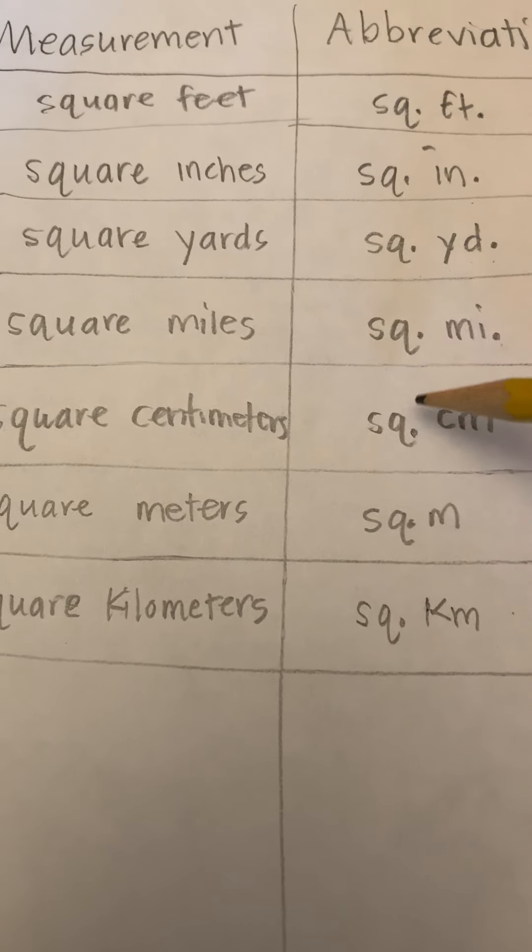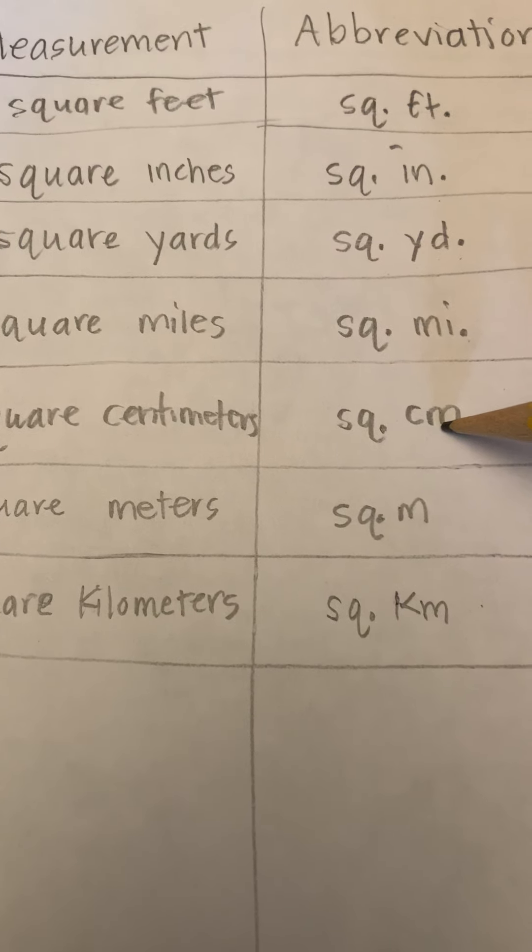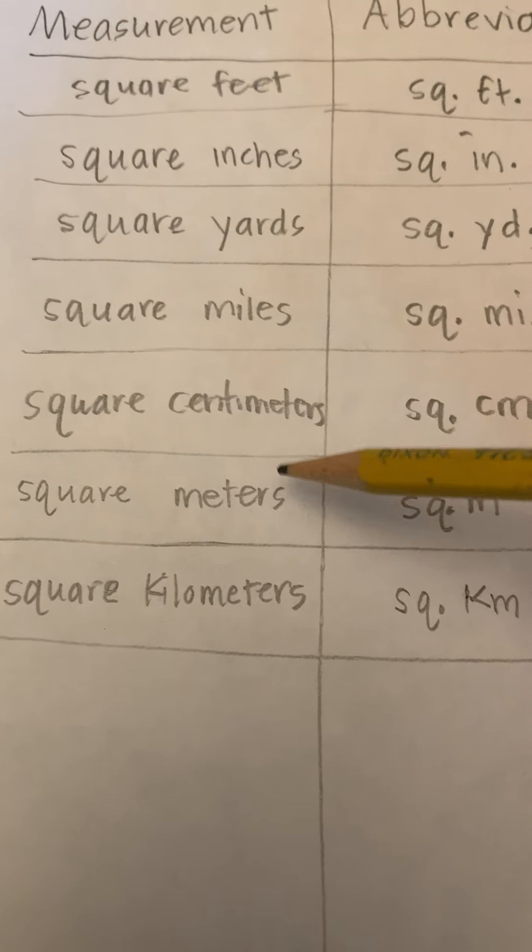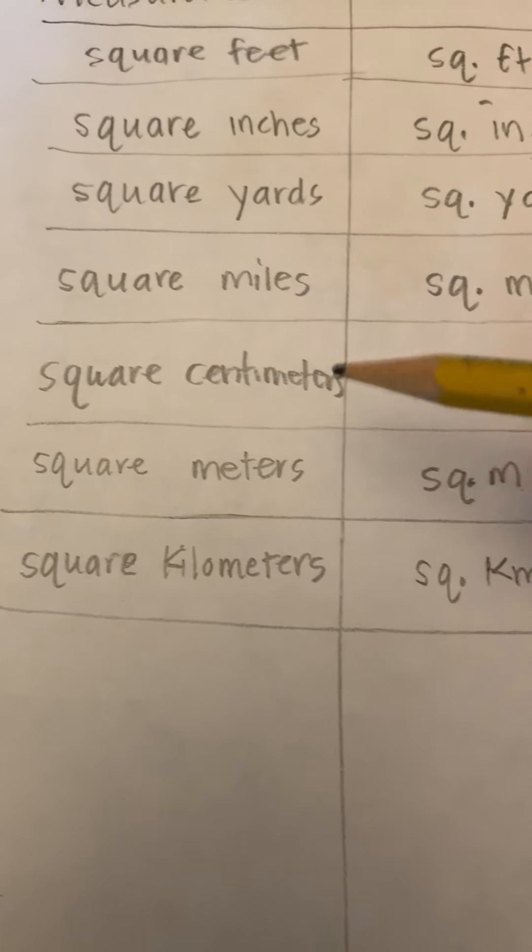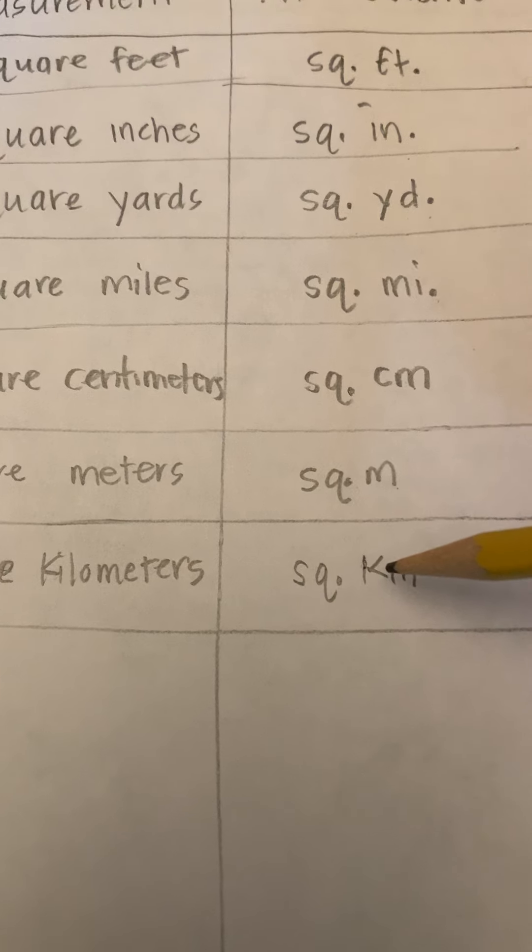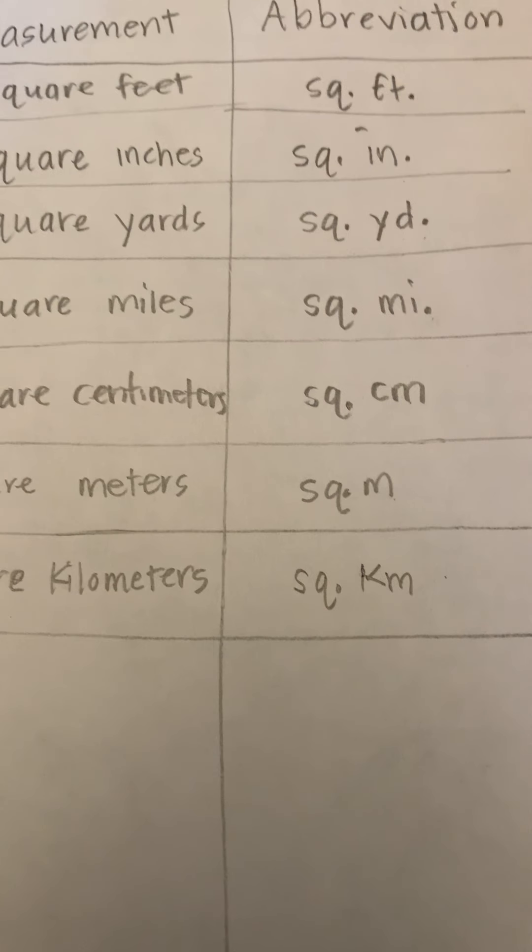Square centimeters: SQ period, CM. Square meters: SQ period, M for meters. And square kilometers: SQ period, KM. I hope you can use those in your answers.